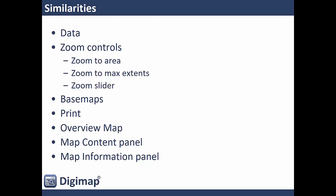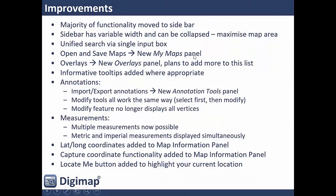The same data is in the backdrop, the controls, the zooming, all exactly the same. The same base maps, the printing mechanism, overview map, map content panel, and map information panel are all just as in the old interface. Where we have made improvements is we've moved a lot more functionality into the sidebar on the left-hand side and allow you to vary its width and collapse it completely. All the searching is done through a single input box up on the top left. Open and save maps are now in the My Maps panel on the left side — a little bit easier and slicker.